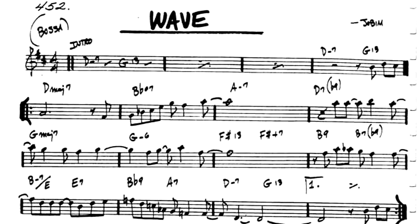Scanning the form of the A section, you'll see that it's 12 bars long. Bar 1 starts with the 1 chord, bar 5 then goes to the 4 chord, and then at bar 9 it uses a turnaround that takes us back to the 1 chord. This is exactly the same form as a blues progression.